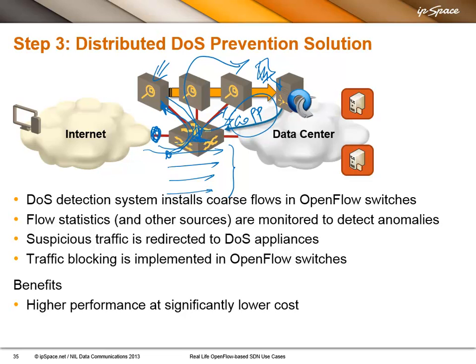Question from Bob: when the switch punts to the controller, does the actual data frame get forwarded, or just a flow tuple describing the flow? The switch sends the whole data frame to the controller. First, sometimes the controller has to forward that traffic to the actual destination — you don't want to lose the first TCP packet and wait for retransmission. Secondly, if you're implementing control plane protocols, the controller needs to see the whole control plane packet. So in most cases, switches send full packets to the controller.